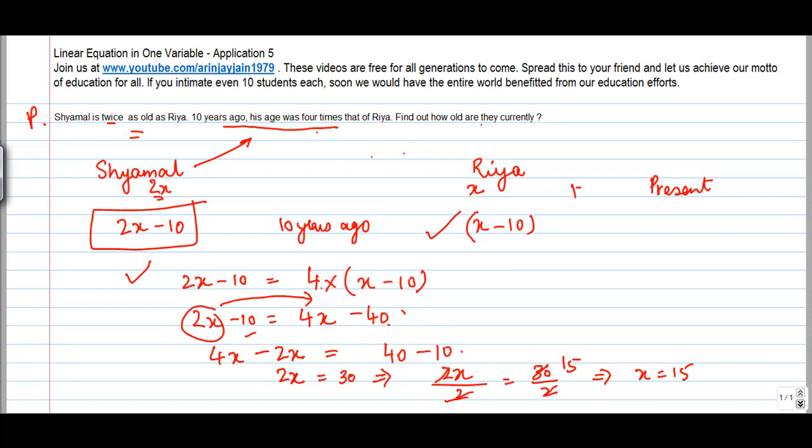So the present age of Rhea is 15 and Shamal is 2 times X is equal to 30.